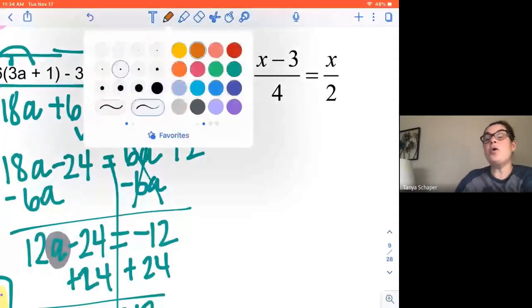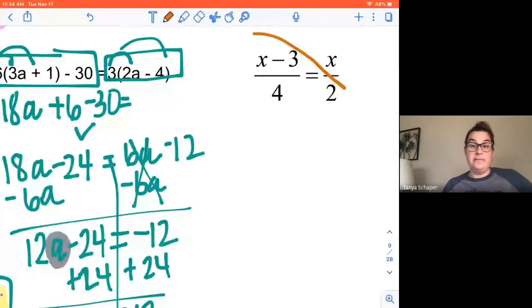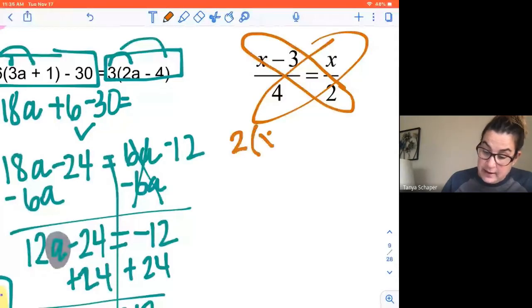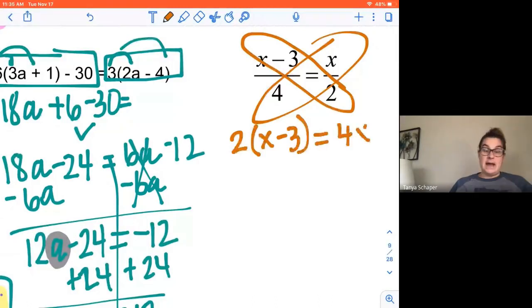Now, if you've been kind of tuning me out a little bit, I need you to hear this. Because this is new. You haven't seen this yet. We are going to pull back what you talked about in seventh grade about cross products and apply it here. We are going to multiply the diagonals and set them equal to each other. So we're going to say that 2 times the quantity X minus 3 is the same as 4 times X. That's how we're going to set up our equation.